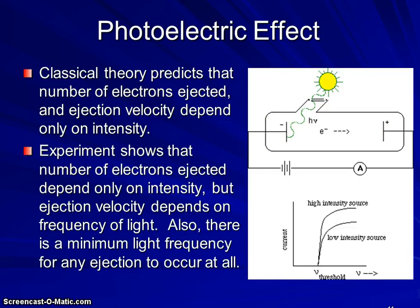The problem is that the experiment shows that the number of electrons ejected depend on the intensity, but that the velocity and the ability to eject them at all depends on frequency. So this agrees with Max Planck's theory that energy is related to frequency. And if the energy isn't large enough, if the frequency isn't large enough, it doesn't matter how many beams of light we bomb onto the surface of a metal, it's not going to eject an electron.